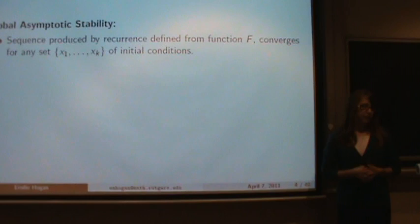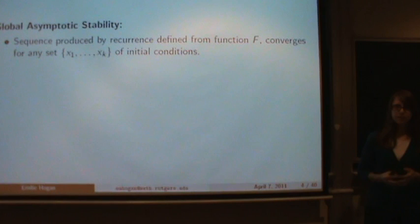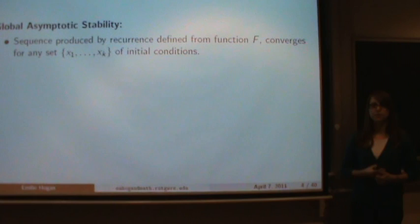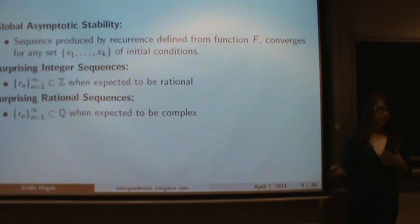The first phenomenon I'm going to talk about is global asymptotic stability. If a recurrence is globally asymptotically stable, that means every sequence it produces converges, independent of the initial conditions, and moreover it always converges to the same value. The next phenomenon is surprising integer sequences — when a recurrence we know will produce rational numbers instead produces integers. Finally, I'll talk about surprising rational sequences, where we expect complex numbers but observe rational numbers.